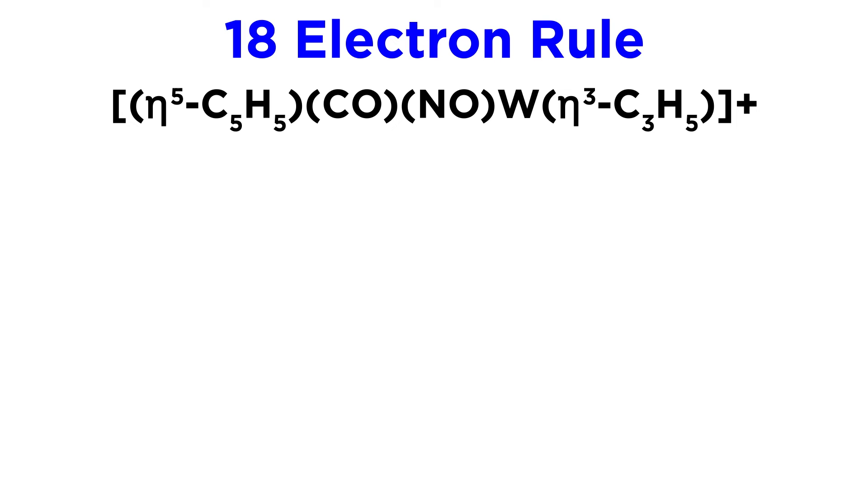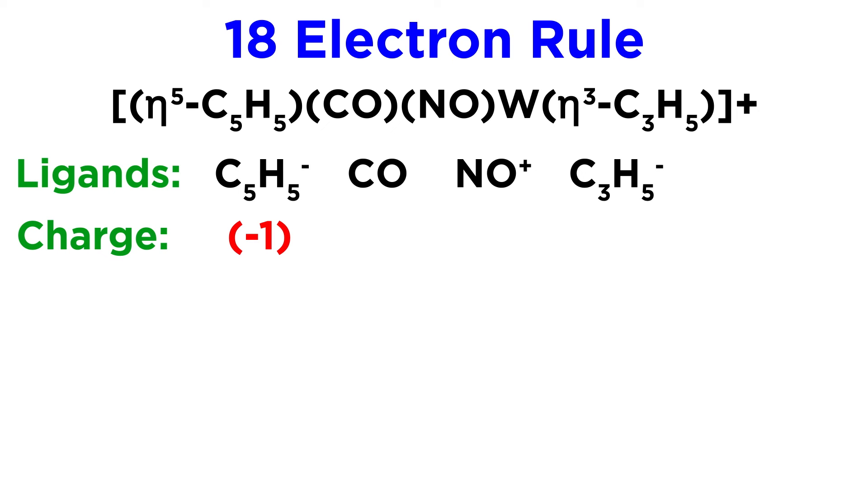Let's try one more, this tungsten complex. We have a CP⁻, a carbonyl, a nitrosyl, and an eta3 allylic ligand with an overall one plus charge on the complex. Here we really have to have our common charges memorized. CP⁻ has a one minus charge, carbonyl is neutral, nitrosyl is one plus, and the allylic ligand is one minus. That's a total of one minus from the ligands, so to get to one plus overall, the tungsten atom must be two plus.